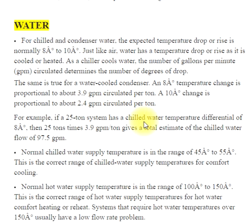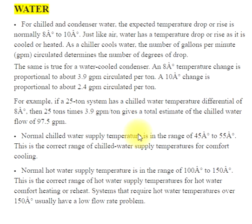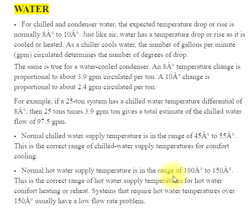For example, if a 25-ton system has a chilled water temperature differential of 8°, then 25 tons times 3.9 GPM per ton gives a total estimated chilled water flow of 97.5 GPM. Normal chilled water supply temperature is in the range of 45° to 55°F for comfort cooling. Normal hot water supply temperature is in the range of 100° to 150°F for hot water comfort heating or reheat. Systems that require hot water temperatures over 150° usually have a low flow rate problem.